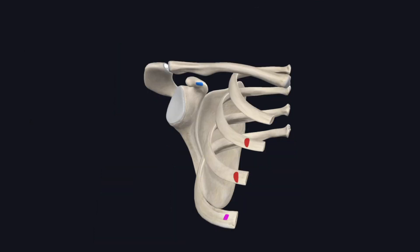The muscle takes origin from the third, fourth and fifth ribs — not from the costal cartilages — and it also arises from the intervening fascia covering the external intercostal muscle. For the insertion, the muscle converges upward and laterally to form a flat tendon, which is inserted into the medial border of the upper surface of the coracoid process.